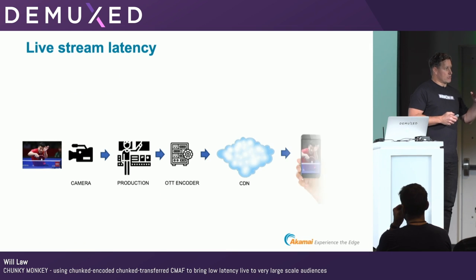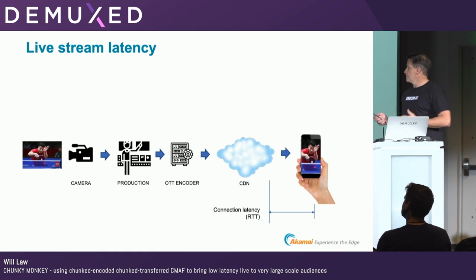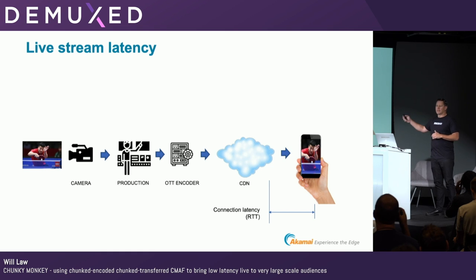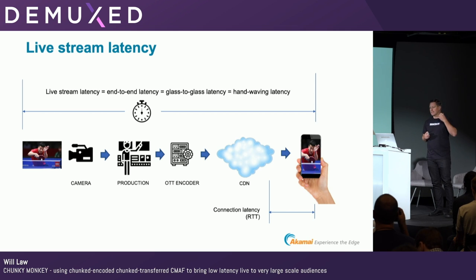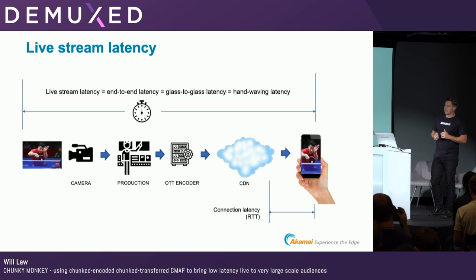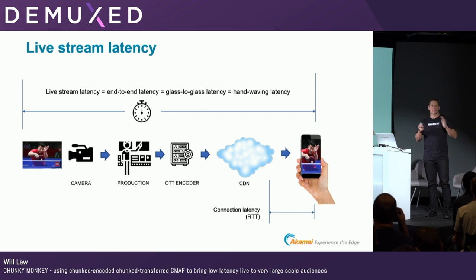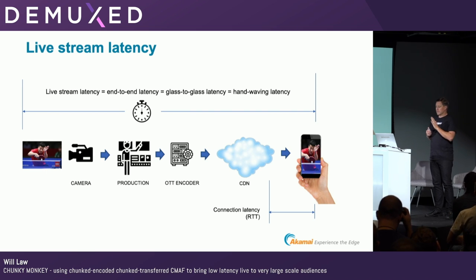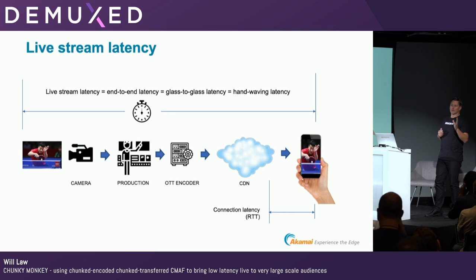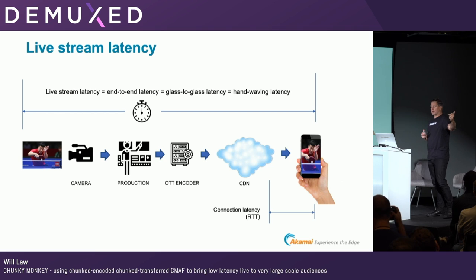When I talk about latency, not to get conflated with another type of latency, which is RTT — I am not talking about the connection latency from the client through to the CDN. What I'm talking about is the end-to-end latency, the glass-to-glass or hand-waving latency: literally wave your hand in front of the camera and have it show up on your device. In the real world there's a production or control room or OB truck that can add six or seven seconds of latency just for censorship or other production delays. The numbers I'm going to talk about refer to essentially zero production delay, coming right from a camera into your encoder.